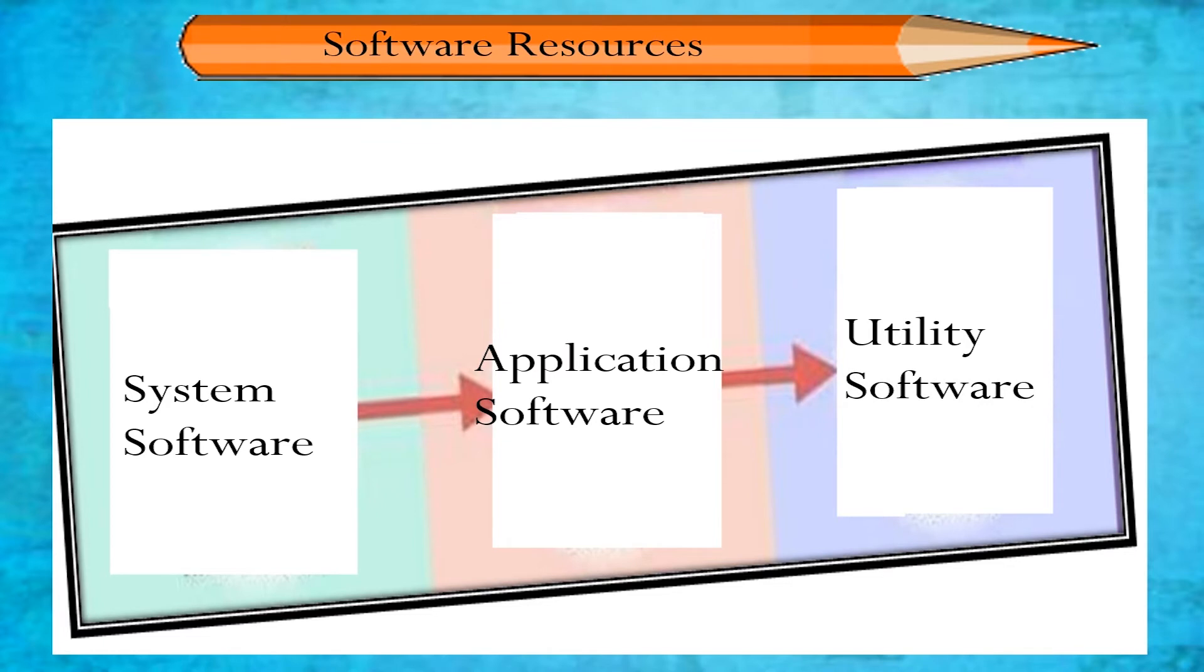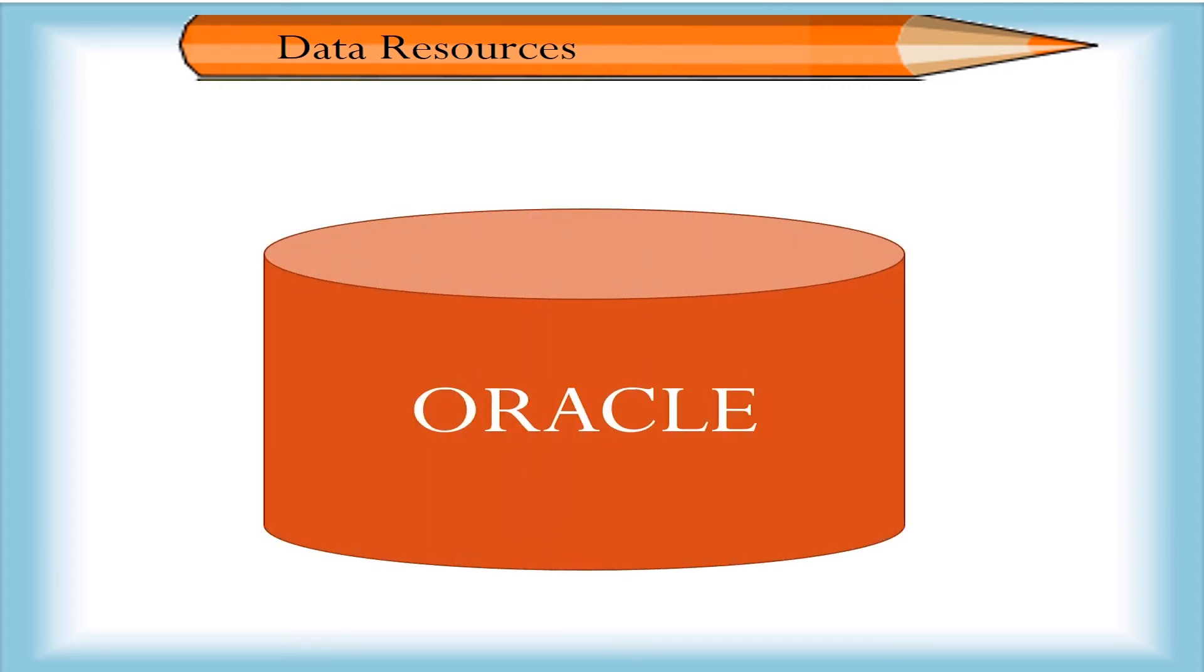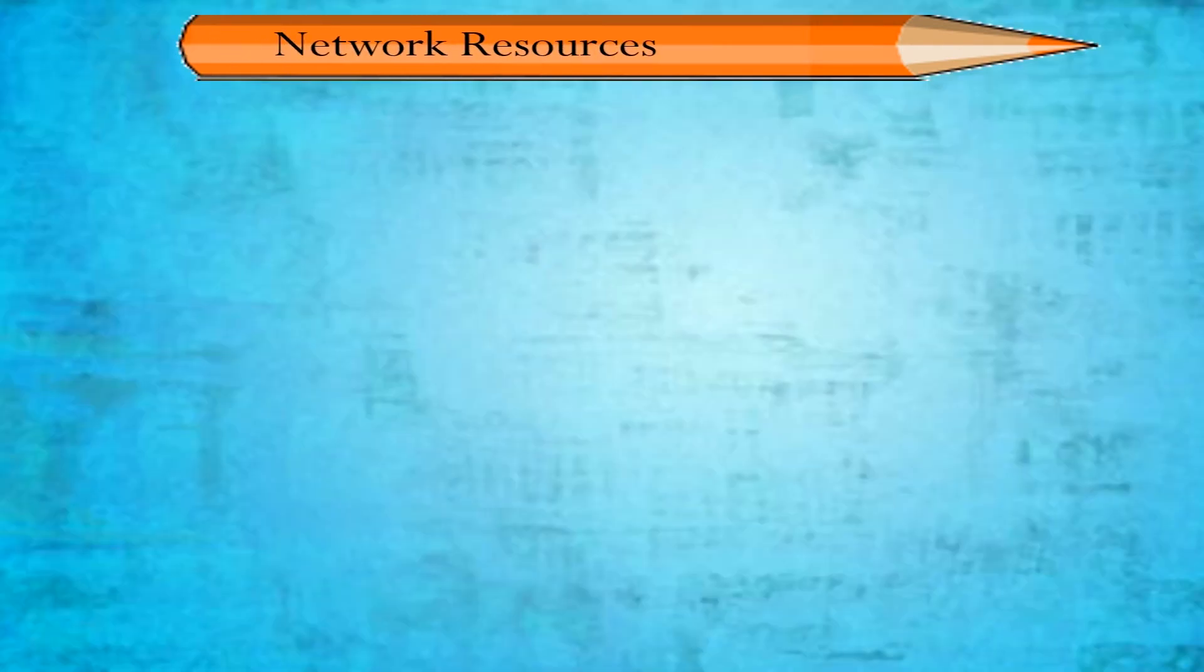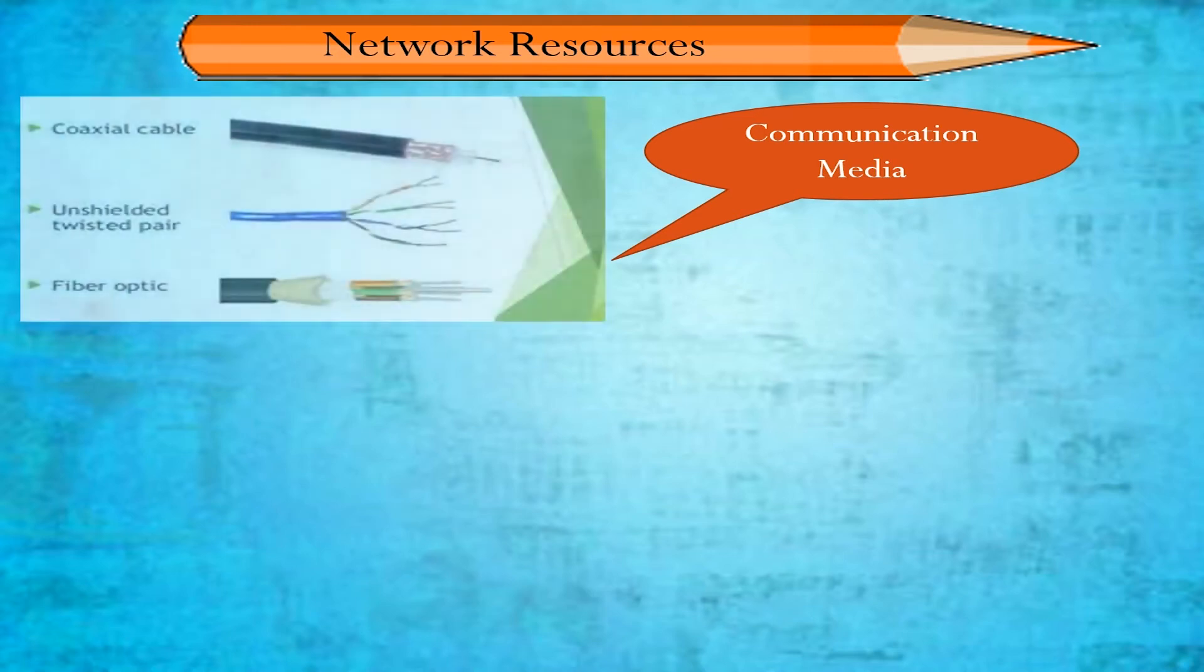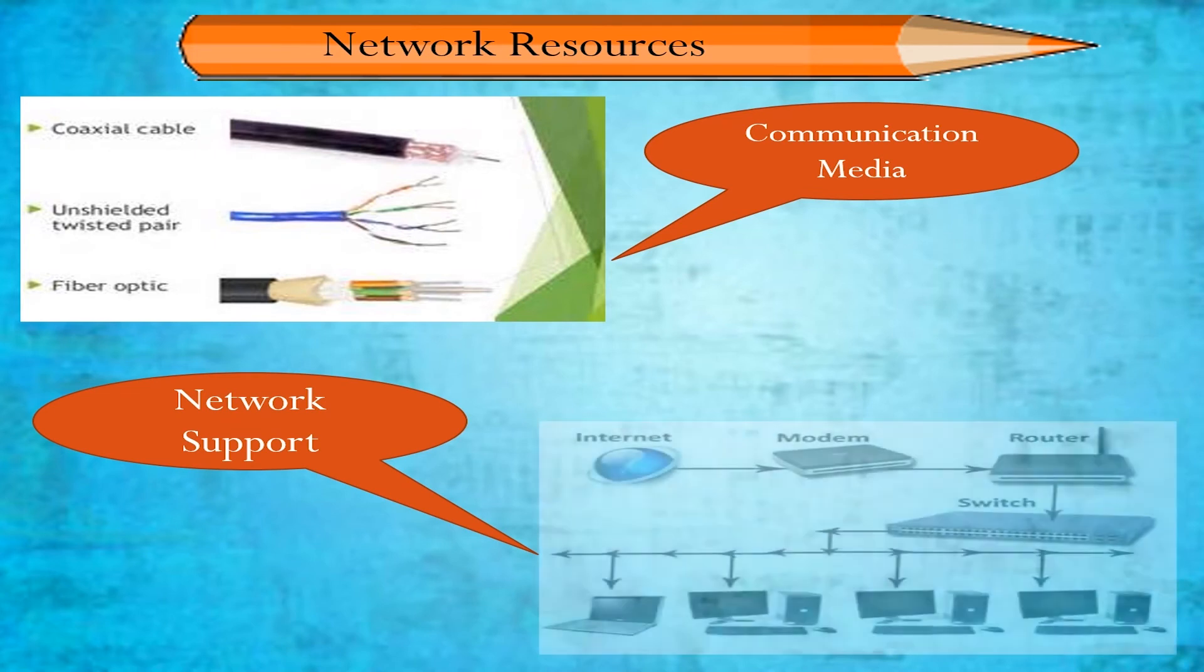The fourth type of resource for information systems is data resource, which includes databases such as Oracle or Access. The fifth type of resource is network resource, which includes: communication media such as twisted pair and fiber optic cables; and network support such as modems and switches.